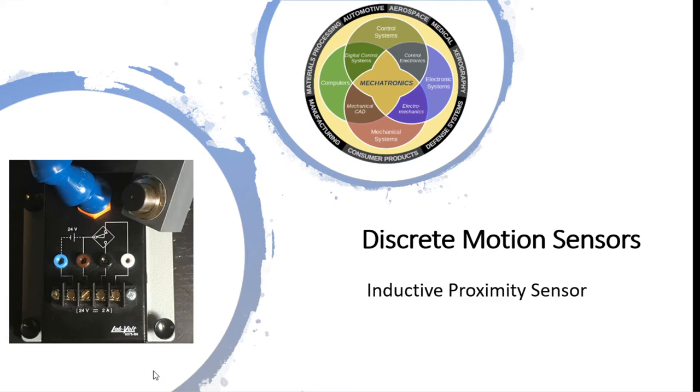What you'll see in the bottom left-hand corner is that LabVolt 6375B0 sensor. It's very similar. We've got the sensor on the end of an articulating arm there, and then it connects up to a relay.